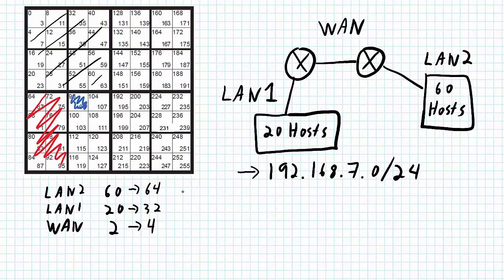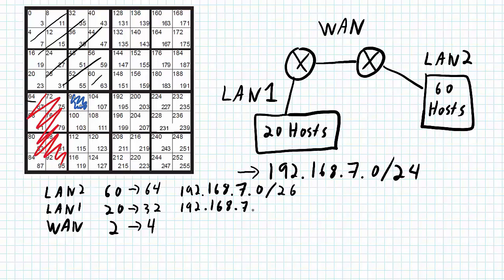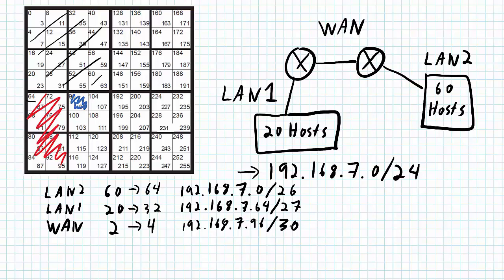LAN2's network address will be 192.168.7.0. We started with a slash 24, cut it in half to get a slash 25, then cut it in half again to get a slash 26 with 64 addresses — so this is a slash 26 network. The next network, LAN1, has network address 192.168.7.64. It's cut in half from LAN2, so this is a slash 27 network. The last network is 192.168.7.96, the smallest possible, which is a slash 30. So I've now got the networks defined for LAN1, LAN2, and the WAN in the most optimal fashion, not wasting any IP addresses.